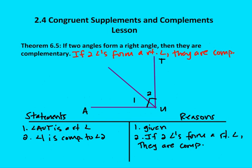The half theorem here says if two angles form a right angle, then they are complementary. For example, I have right angle AUT with angles one and two. AUT is a right angle — that's given, or you can assume it from the diagram because of the box in the corner of the angle. Then you state that angle one is complementary to angle two, with the reason being: if two angles form a right angle, then they are complementary.